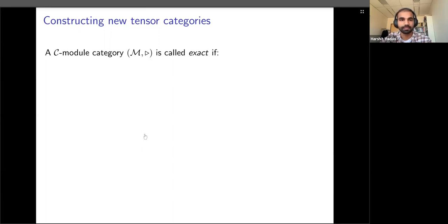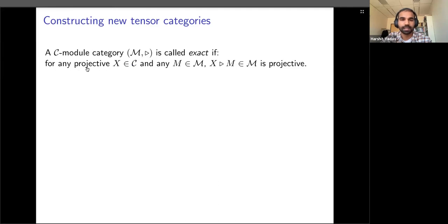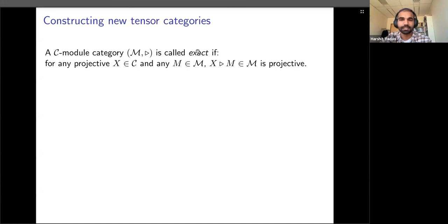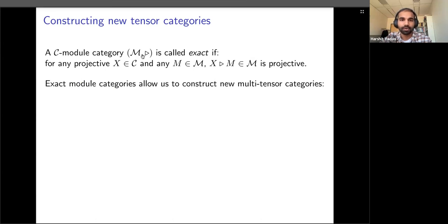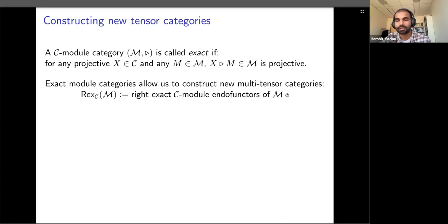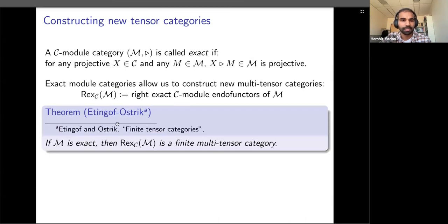Tensor categories are important and one would ideally want constructions for obtaining new examples — that's where exactness of module categories comes in. This homological condition says: if you take any projective object x in C and any object m, then the output obtained by acting on m should be projective. If an exact module category satisfies this condition, then we can define the category of C-module endofunctors of M — functors from M to M that respect the C-module structure.